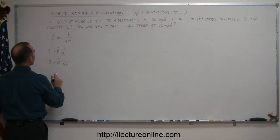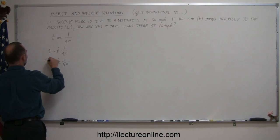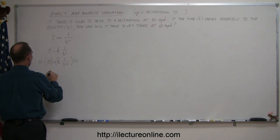Multiplying both sides by 50, so that cancels out, and we have 50 times 15 or 750 equals k.